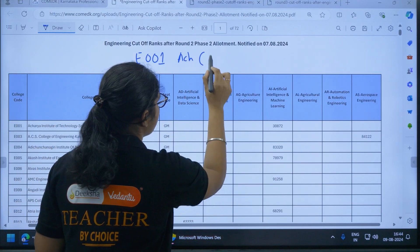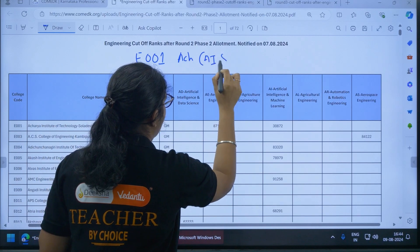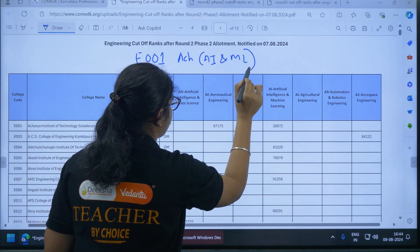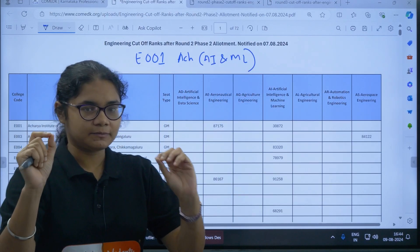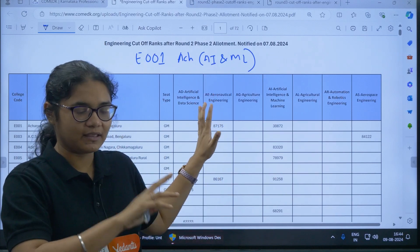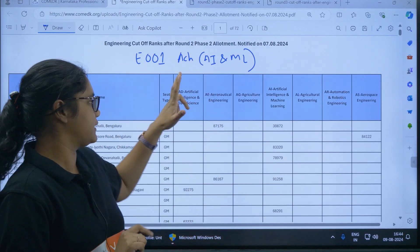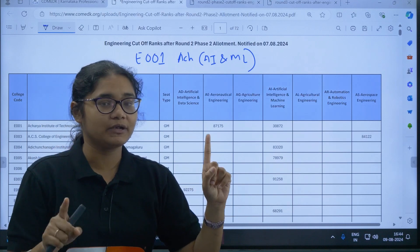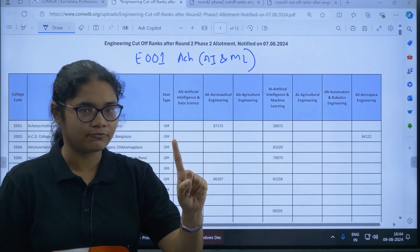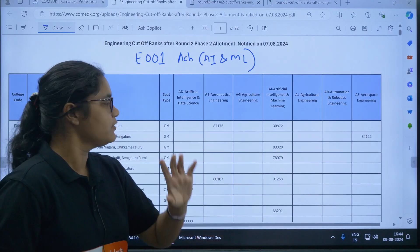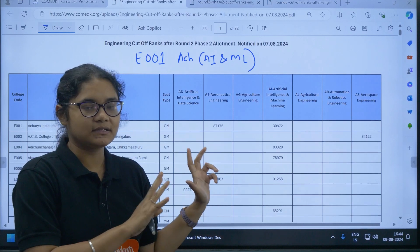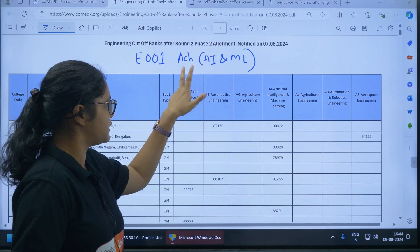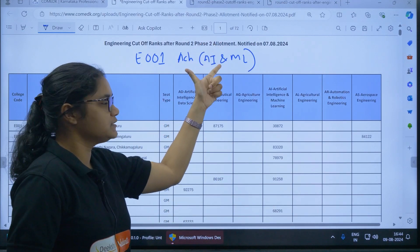And in this you want to take Artificial Intelligence and Machine Learning. Whichever is your first preference, you have to do the same thing with that preference. I am just taking an example for this college. So first, Step 1, please note it down and understand it clearly. Step 1, you have to check the cutoff for this year. What is the cutoff for this year for this particular option, that is this branch and this course.